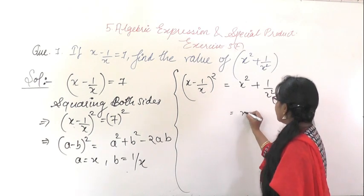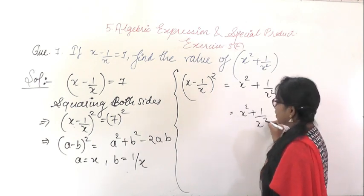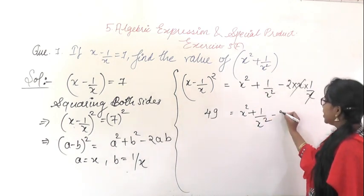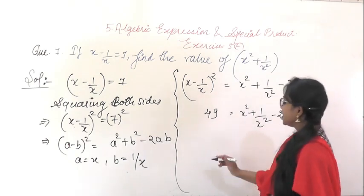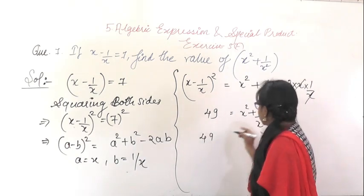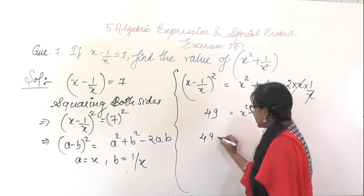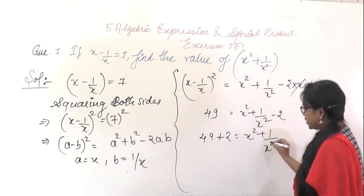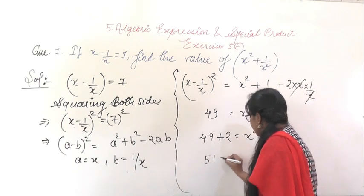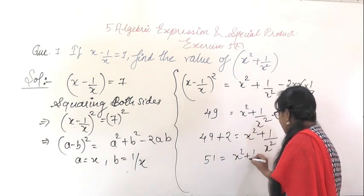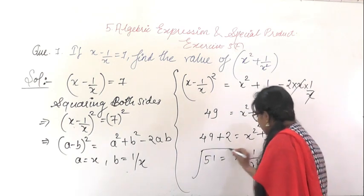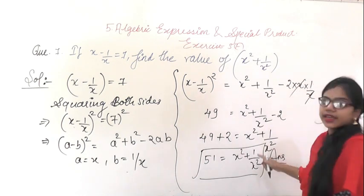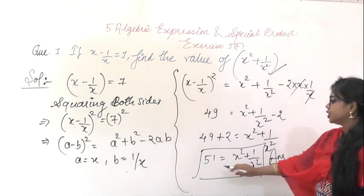The x's cancel, leaving x² + 1/x² - 2 = 7² = 49. Transpose -2 to the other side: it becomes +2, so 49 + 2 = 51 equals x² + 1/x². So the value of x² + 1/x² is 51.